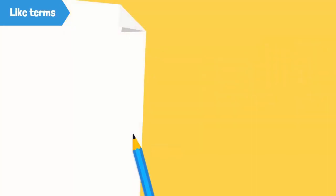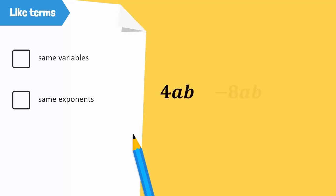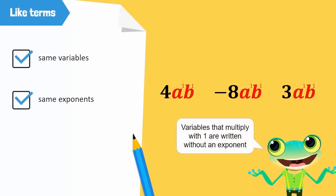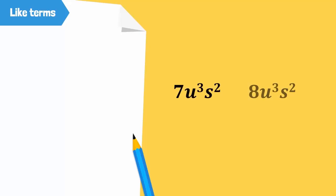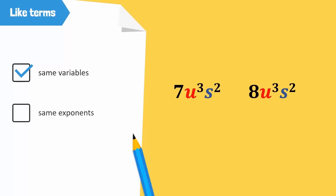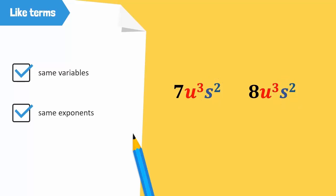Terms are like if they have the same variables with the same exponents; otherwise, they are called unlike terms. 4ab, minus 8ab, and 3ab are all like terms since all three terms have the same variables and the same power of the variables. Remember that coefficients can be different for like terms. For example, two given terms both have variables u and s, where u is raised to the power 3 and s is raised to the power 2 in both terms — so they are like terms.